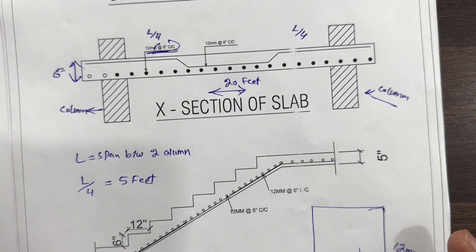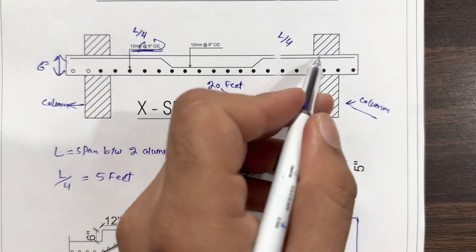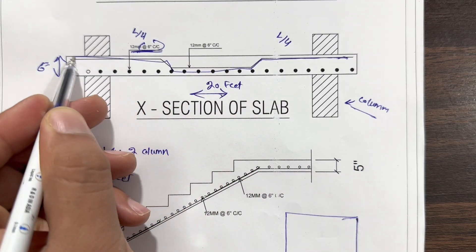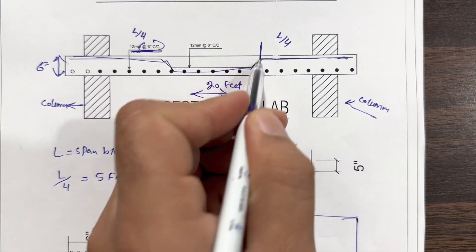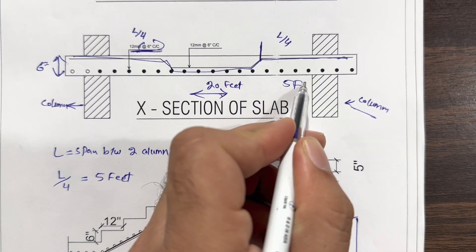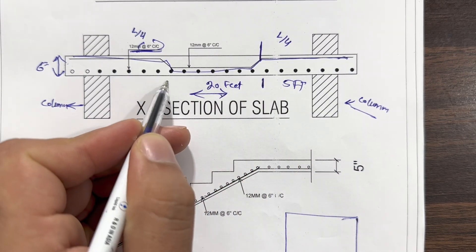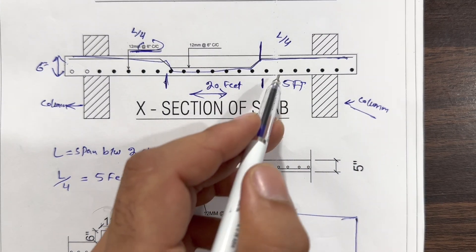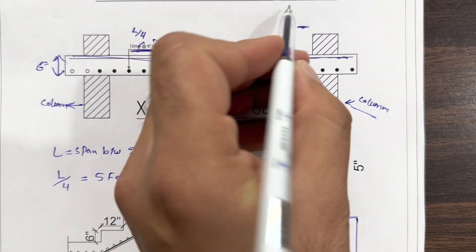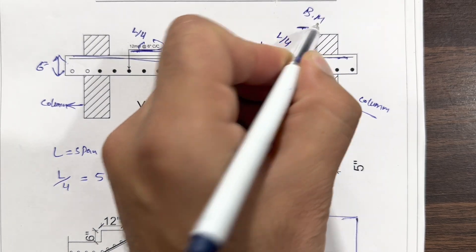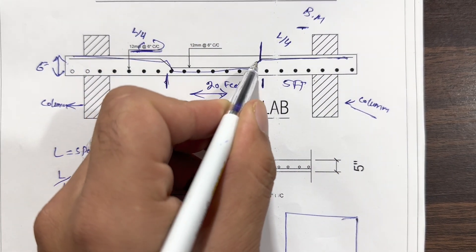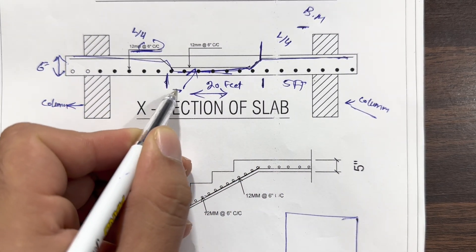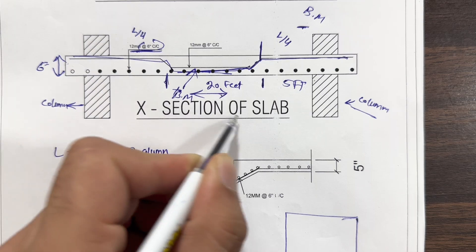Next, you can see this is main bar. Main bars, you can see we have crank bar. Look at here, at the distance of L by 4, at the distance of 5 feet at this place and 5 feet here. So you can see we have crank bar to resist negative bending moment. Here we have negative bending moment. Here we don't have a crank bar at the bottom, so we have plain. Therefore this is positive bending moment.